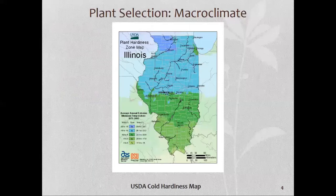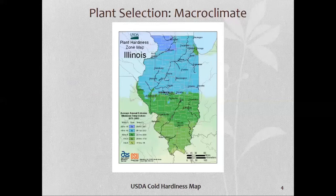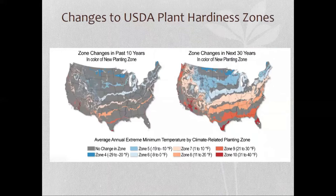To look at what is a suitable tree, we need to look at the bigger picture first. What is the macro climate of Illinois? We assess that by looking at the different climatic zones in the state. We're in zone five, just above the line — and the USDA plant hardiness zones use lower numbers for colder climates. Over the past 30 years we've seen changes in these zones due to climate change and improved weather data collection. The picture on the left shows changes in the past 10 years; the picture on the right shows predicted change over the next 30.